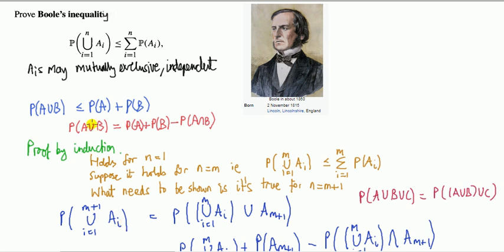So last comment then. This Boole's inequality sometimes also goes by the name finite sub-additivity. Second thing is that this also extends - you might see in some textbooks where they replace the n by infinity. In that case this result goes by the name of countable sub-additivity.